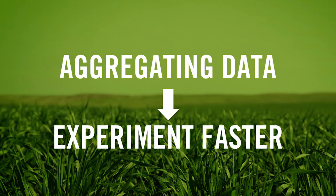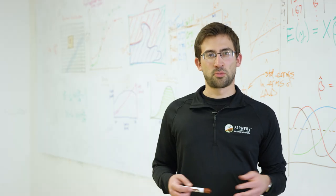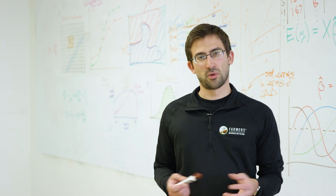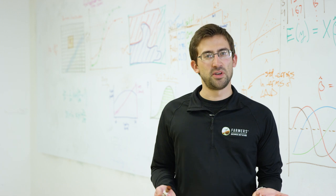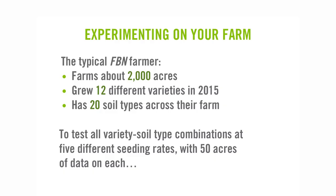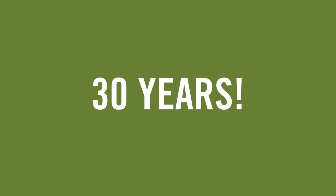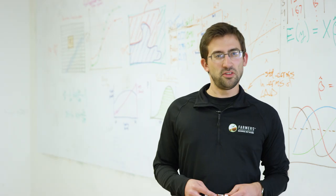The first reason big data is so valuable on your farm is that by aggregating data from a lot of different farmers — which is what FBN does — we can run virtual experiments much faster than an individual farmer could. Farmers have always been very experimental, but farming is very complicated. There's a huge number of factors affecting crop production: soil conditions, weather conditions, genetics of the seed. For a farmer to try 12 different varieties across 20 different soil types at different seeding rates with 50 acres of data on each combination, we calculated this would take 30 years — completely infeasible.